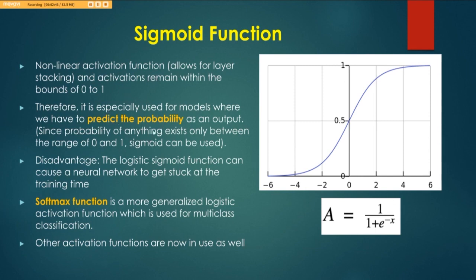Sigmoid function-based activation functions are especially used for models where we have to predict the probability as an output, and since the probability exists between 0 to 1, it is a suitable idea to use sigmoid function as an activation function. The only problem is that this can get your neural network to get stuck. There is one more term that I am going to introduce you to right now, and this is something you will encounter a lot when we work with convolutional neural networks, and that is a softmax function. It is a more generalized logistic activation function and it is used for multi-class classification.